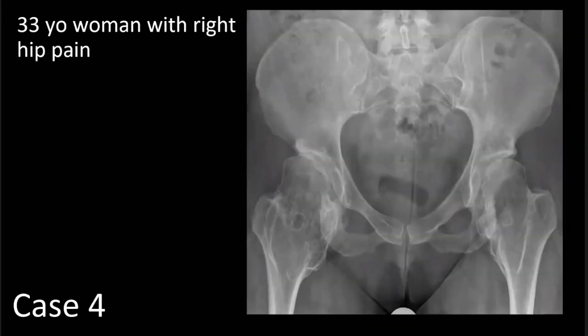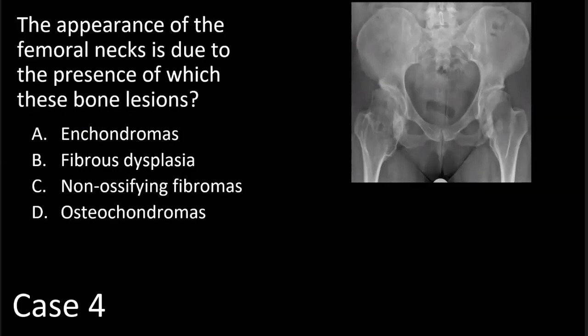Our next case is a 33-year-old woman with right hip pain. On this AP view of the pelvis, we see loss of the normal waisting between the femoral head and neck in a bilaterally symmetric fashion. We also see large, broad bony projections along the medial aspects of the femoral necks. And lastly, we see small ovoid lucencies with well-corticated margins in the femoral necks as indicated by the arrows. The question is: the appearance of the femoral necks is due to the presence of which bone lesion? Enchondromas, fibrous dysplasia, non-ossifying fibromas, or osteochondromas?